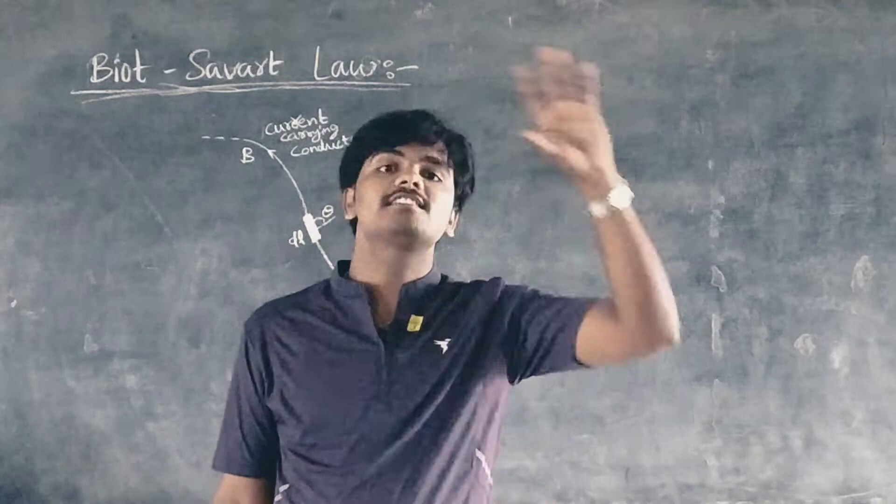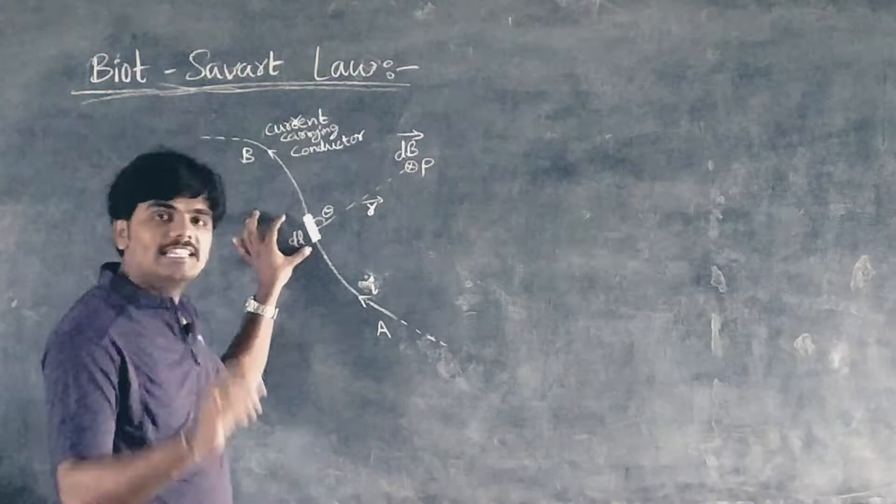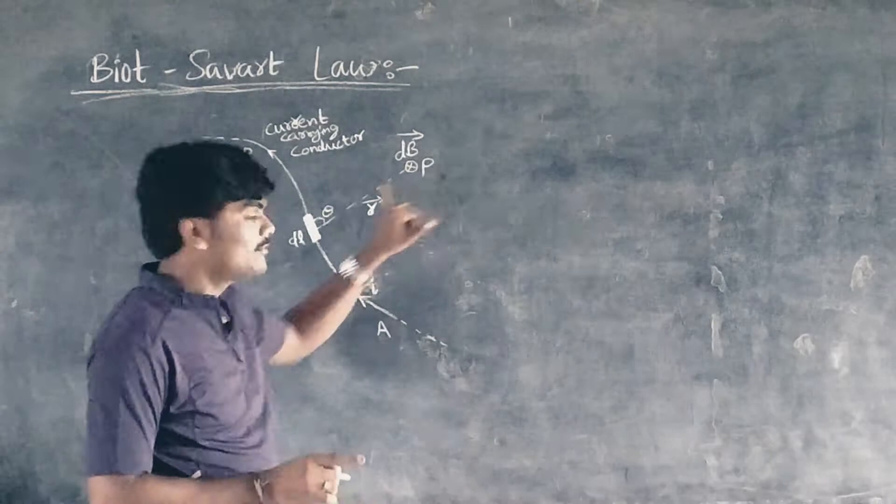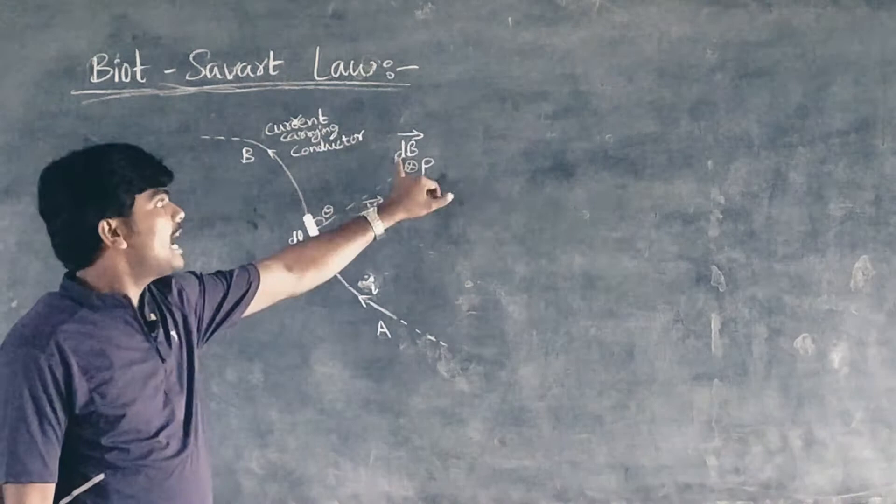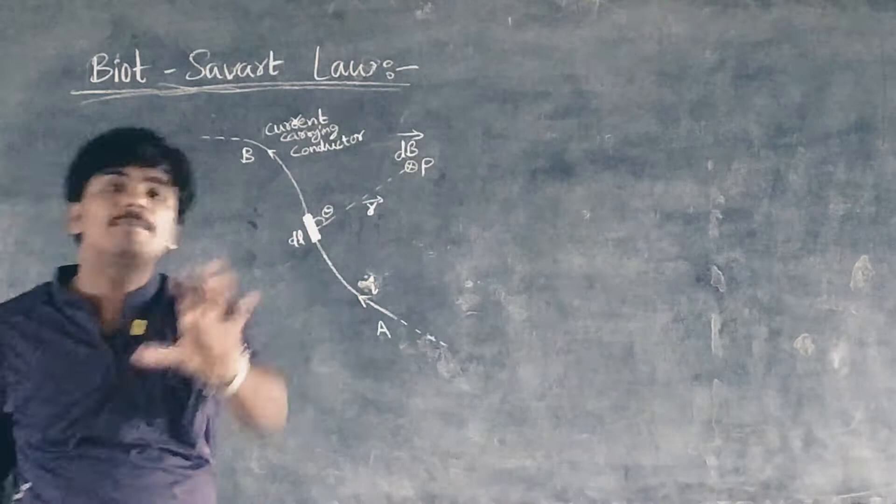Let dl be the length of one such element and r be the displacement vector of point P from this element. Now, Biot and Savart observed that dB at point P due to small element dl of a current-carrying conductor depends upon the following factors.